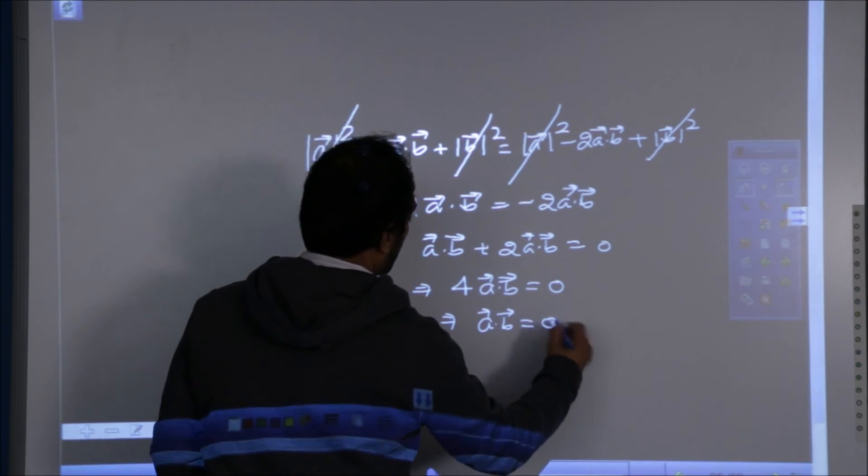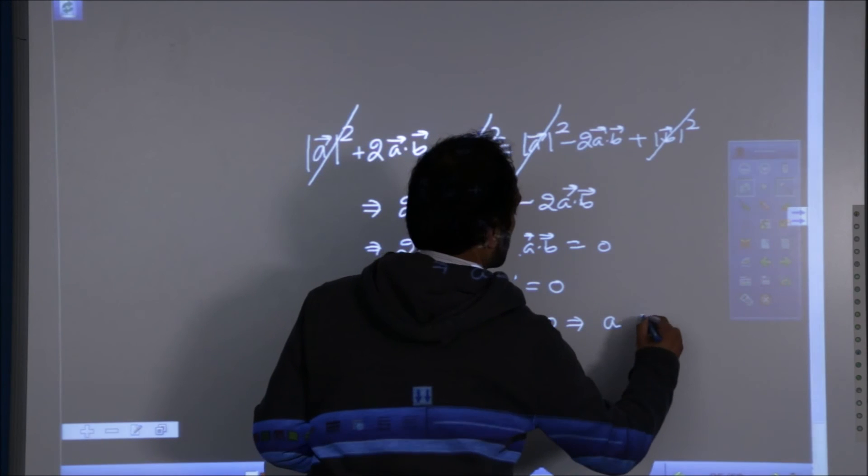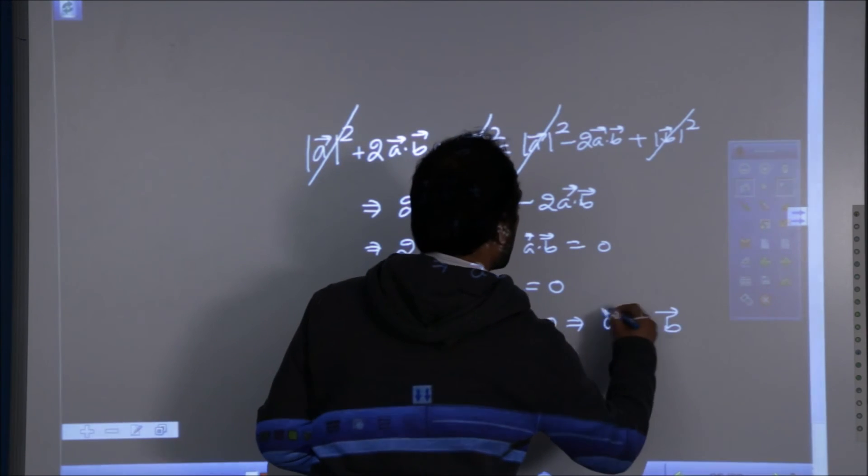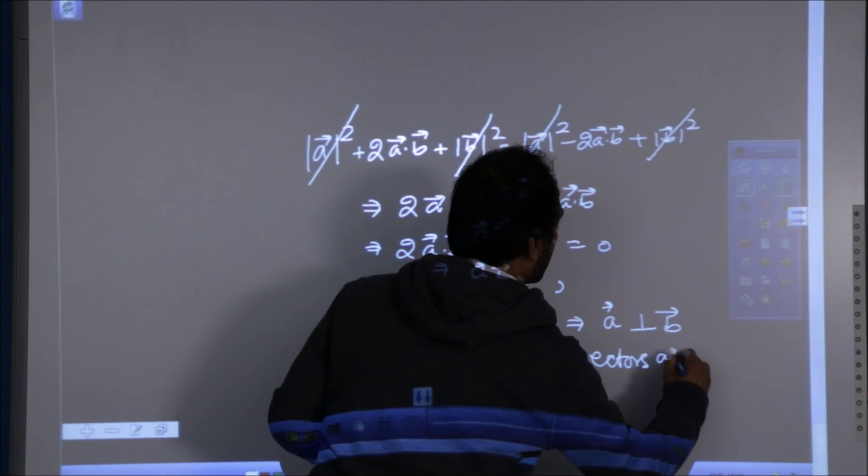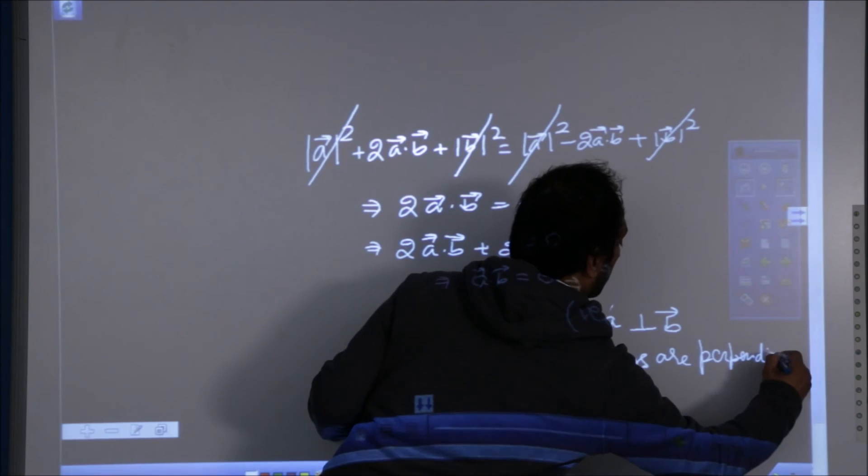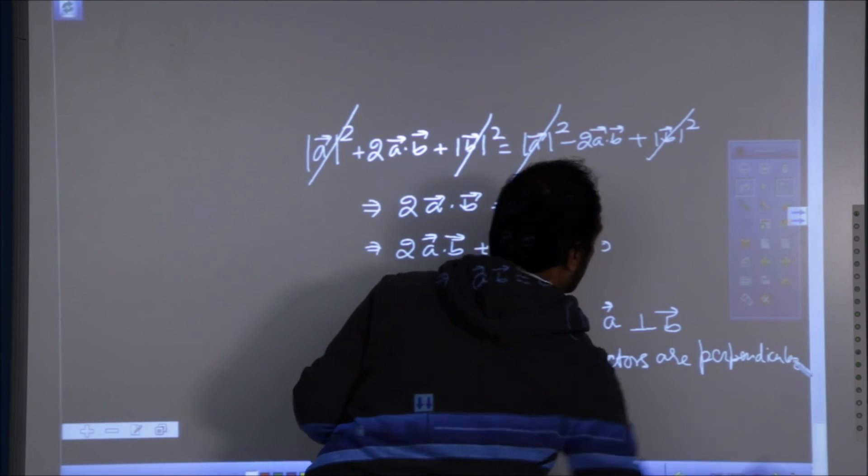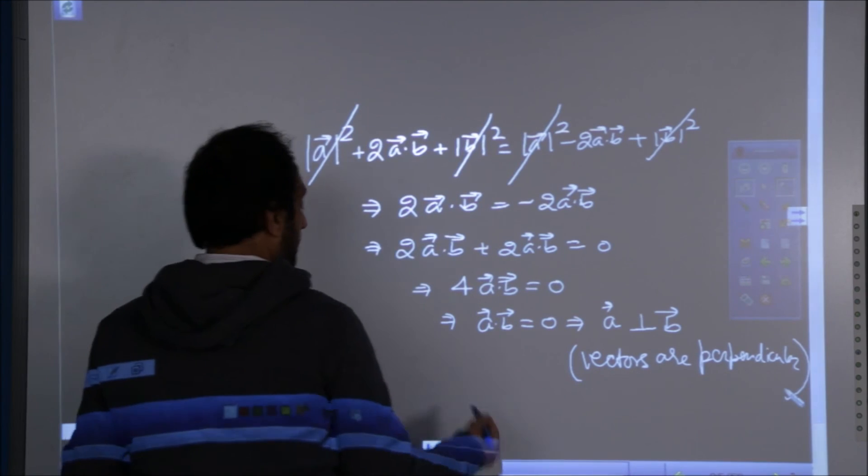So, the dot product of two vectors is zero and none is a null vector. So, the possibility left is that they are perpendicular. The two are perpendicular. Vectors are perpendicular. Hence proved.